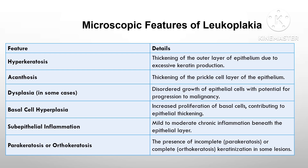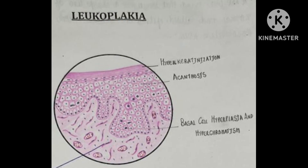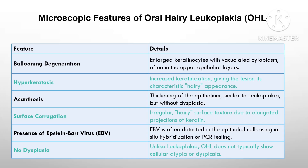Looking at microscopic features: under the microscope, leukoplakia often shows hyperkeratosis — thickening of the epithelium due to excess keratin. In some cases dysplasia may be present, indicating risk of malignancy. Acanthosis, or thickening of the prickle cell layer in the epithelium, is also common, along with inflammation beneath the epithelial layer.